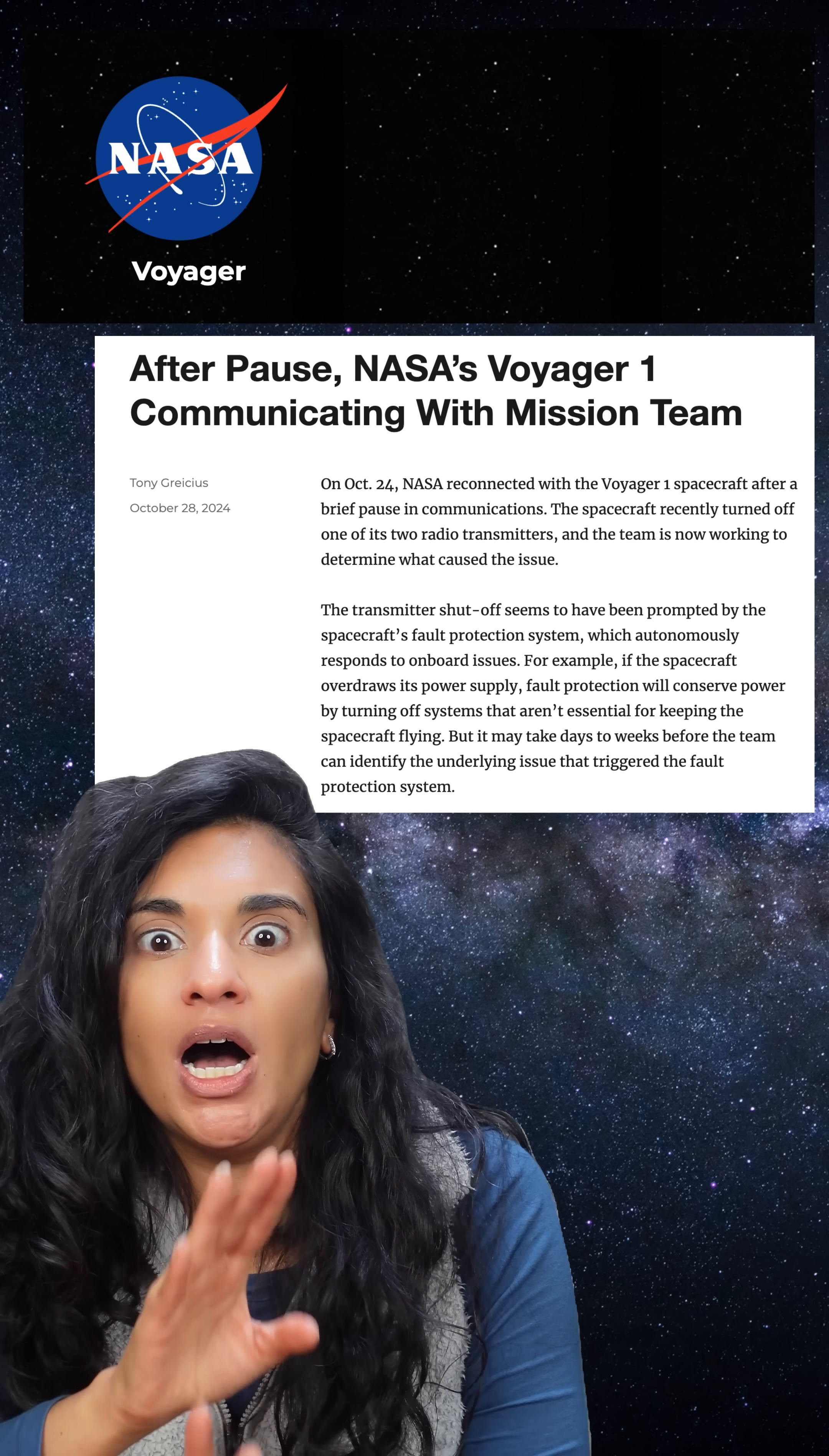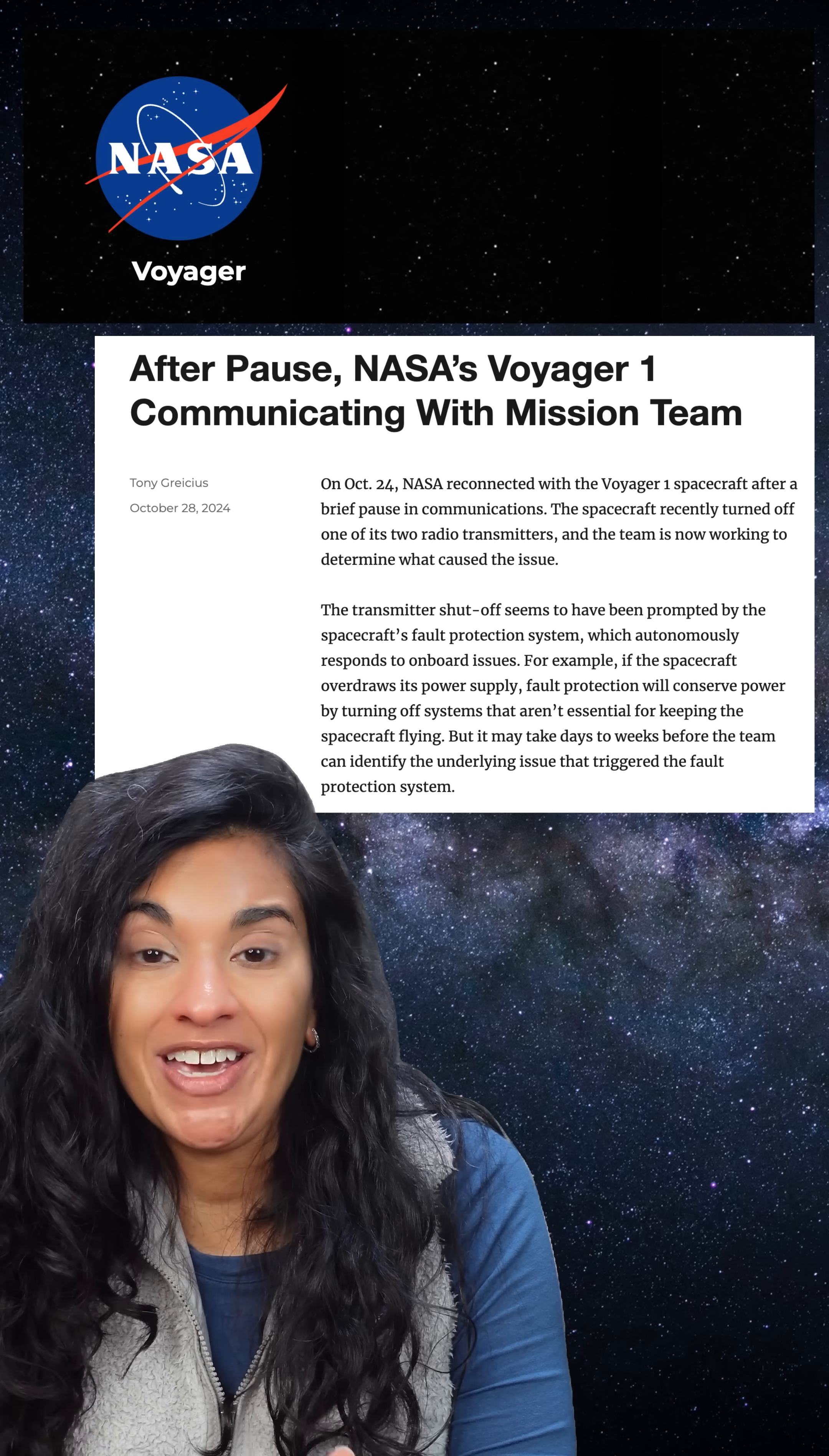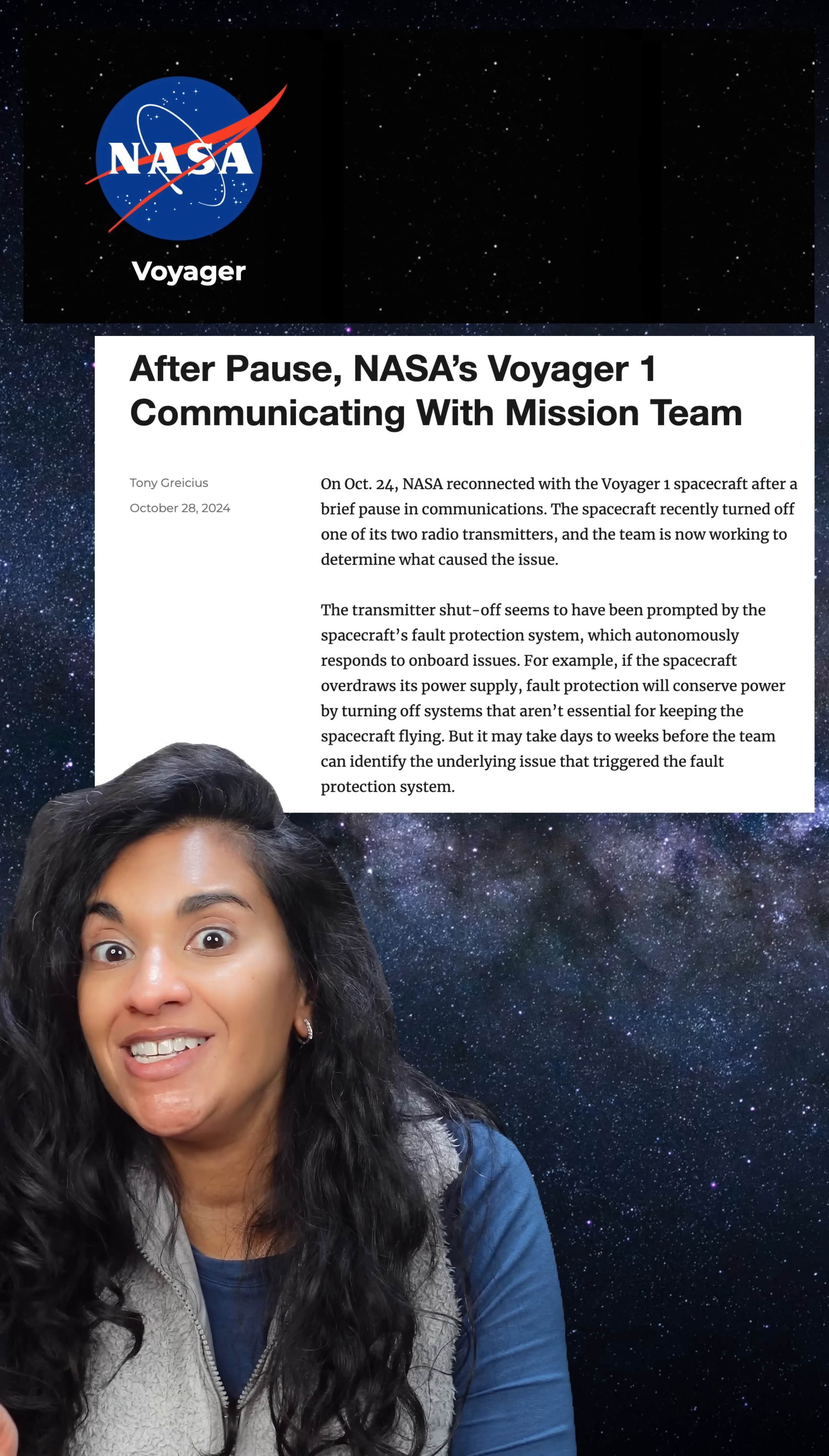Voyager 1 was having communication problems again. At the end of October, Voyager 1 switched to its S-band transmitter, which hadn't been used since 1981.